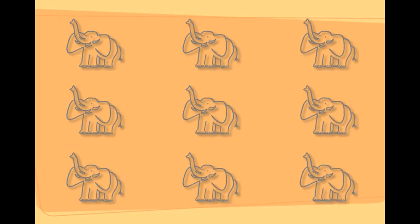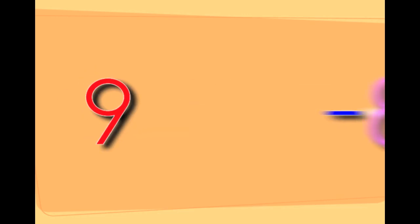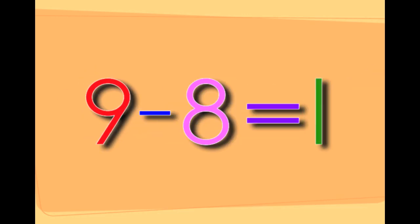There are nine elephants. If you take eight elephants away from nine elephants, it leaves you with one elephant. Nine minus eight equals one.